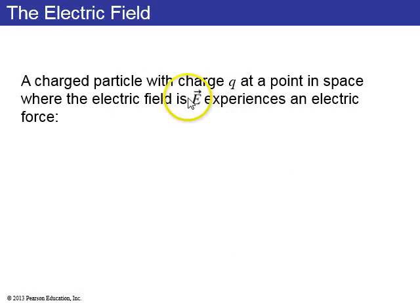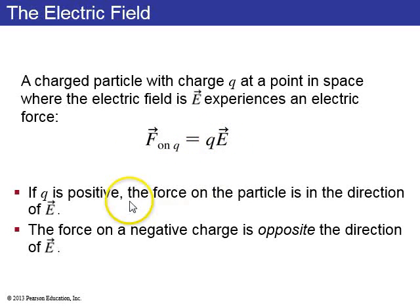So any charged particle with charge q, sitting at a point in space that has an electric field E, will experience a force q times E. If q is positive, then the electric force on the particle is in the direction of the electric field. If q is negative, like if you have an electron, then the force is in the opposite direction of the electric field.